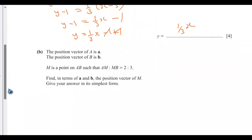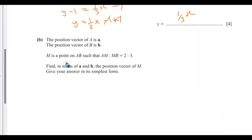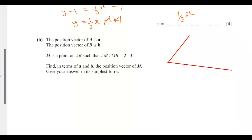Part B. The position vector of A is a and the position vector of B is b. M is a point on AB such that AM to MB equals 2 to 3. Find, in terms of a and b, the position vector of M. Since a and b are position vectors, they come from the same origin point O. So OA equals a and OB equals b.